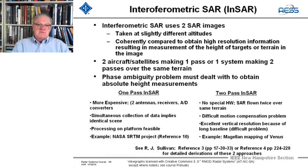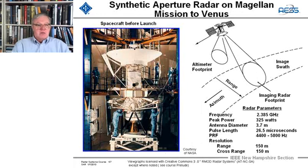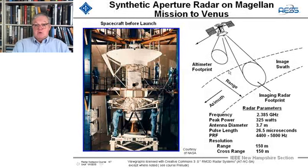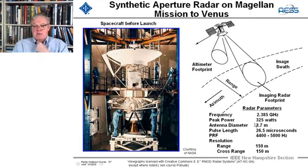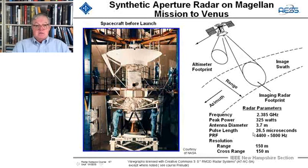Here is a picture of the Magellan mission spacecraft before it launched, showing the antenna and the altimeter antenna with its footprint on the ground. Here are the detailed parameters: 2.4 gigahertz — a little lower in frequency than typical S-band — 325 watts of peak power, antenna diameter of 3.7 meters, pulse length of 26 microseconds, and a PRF between 4,400 and 5,800 hertz, variable depending on different parameters.